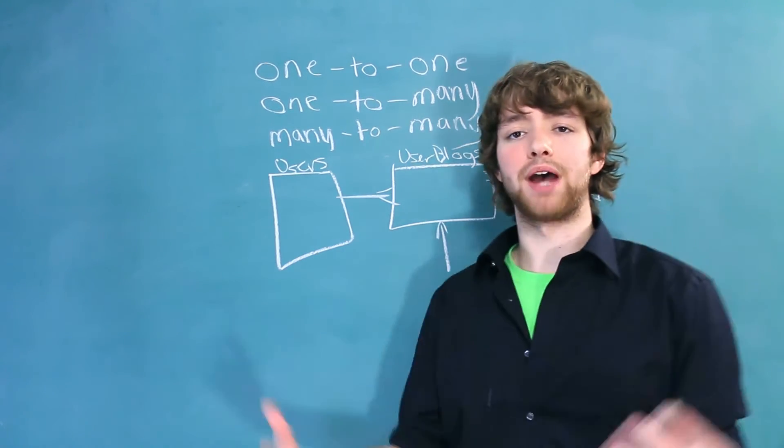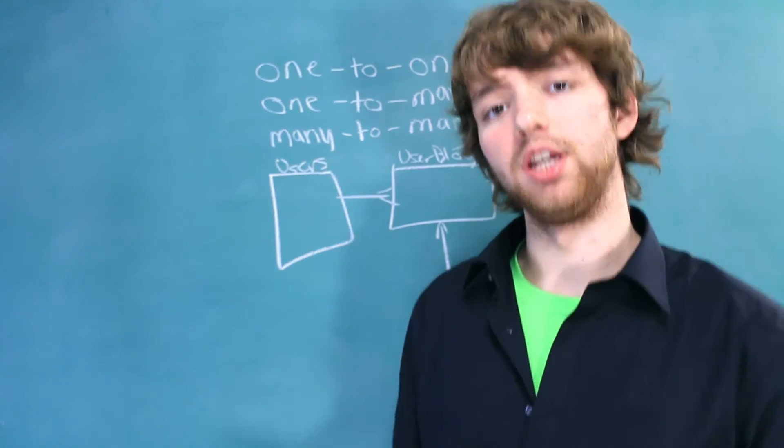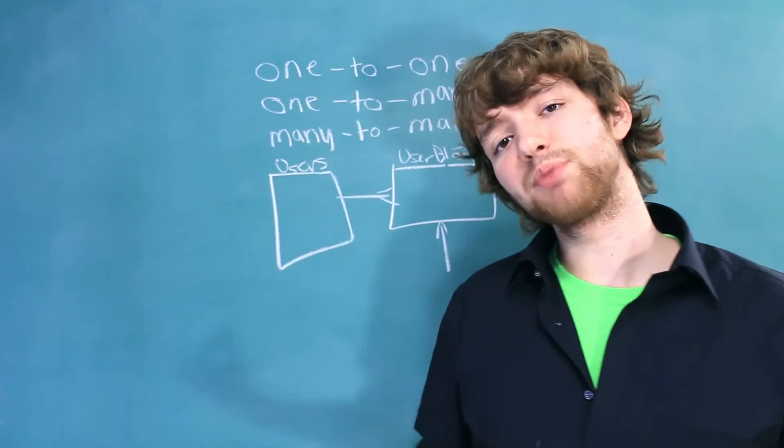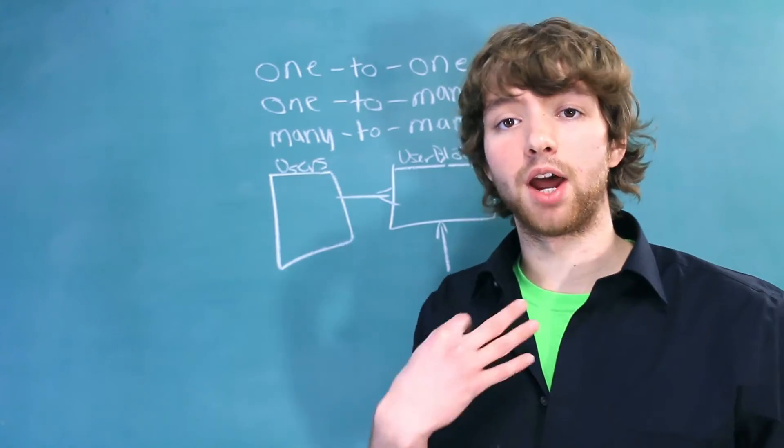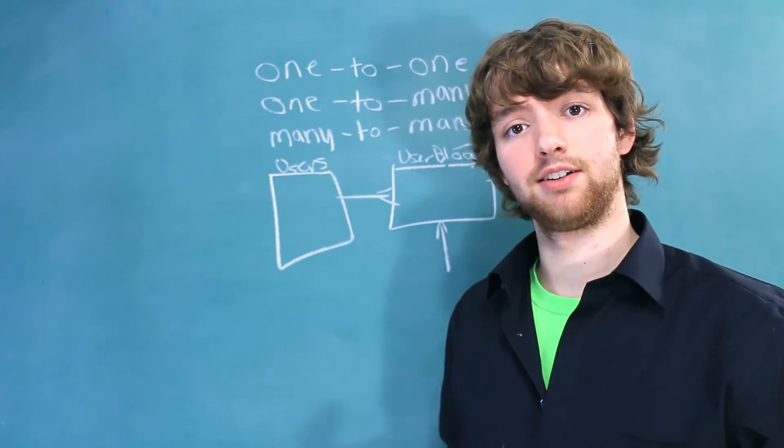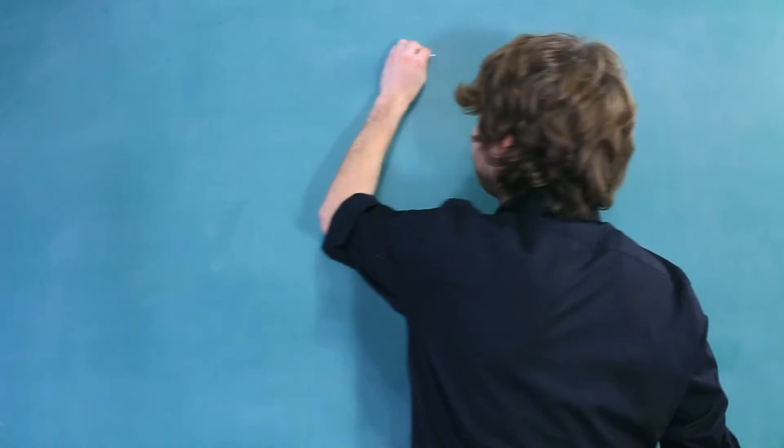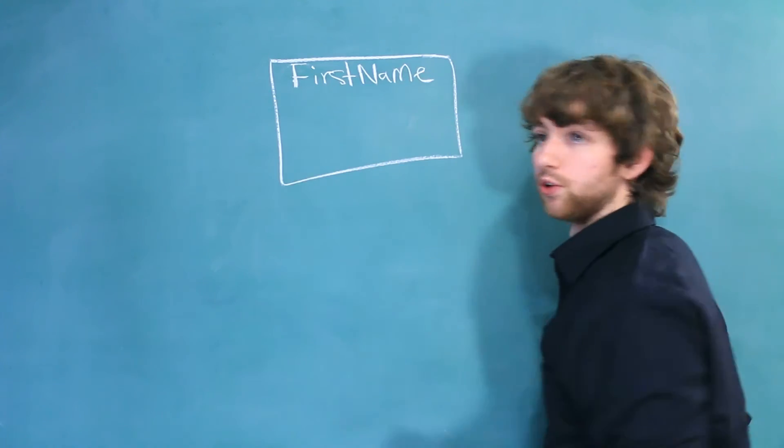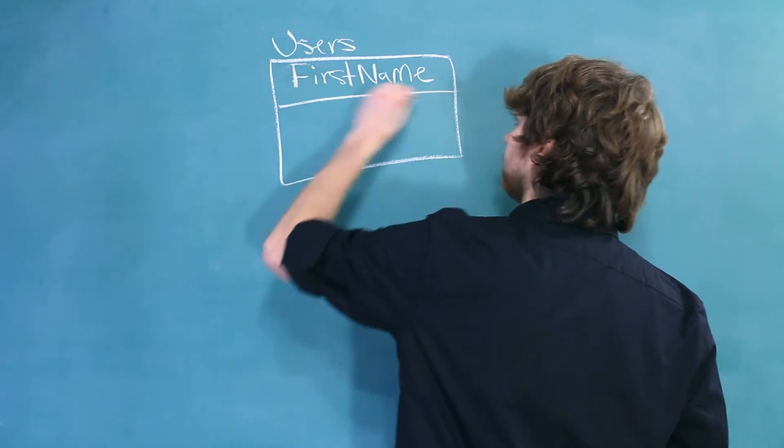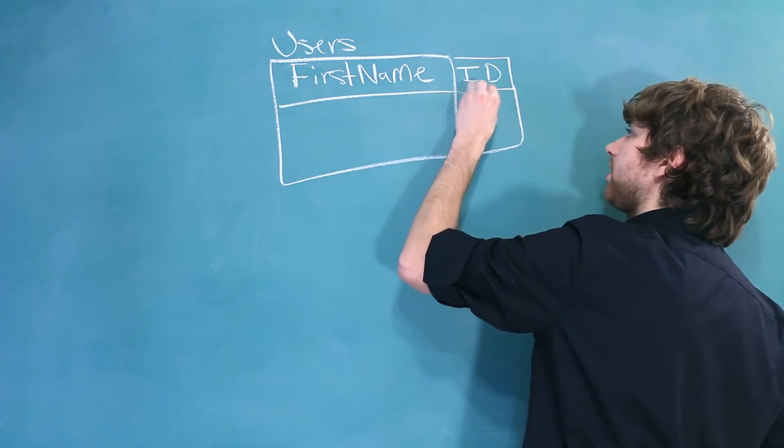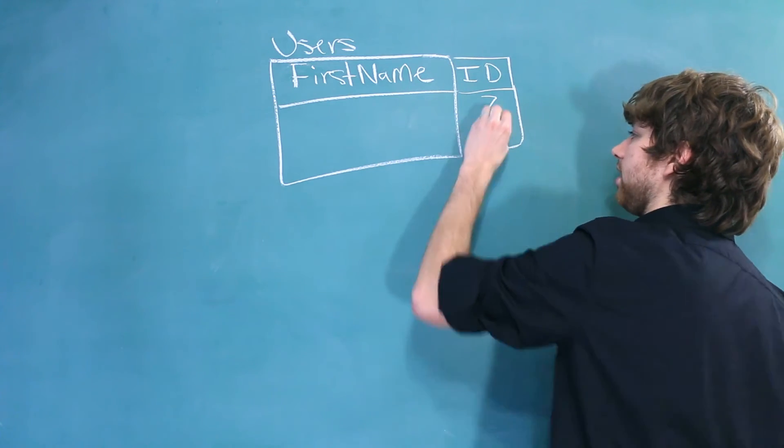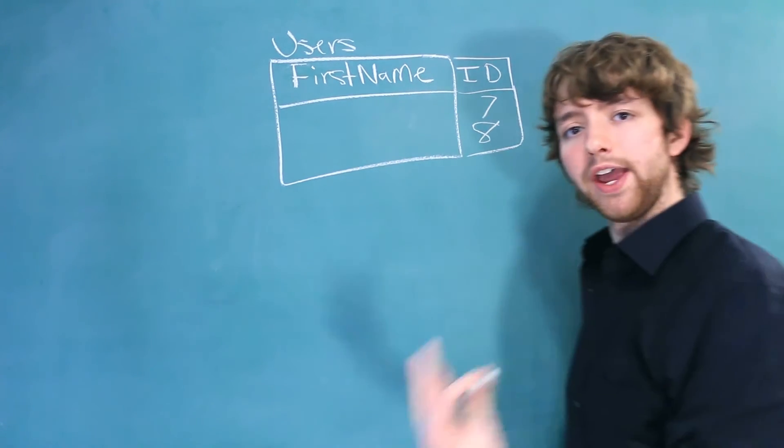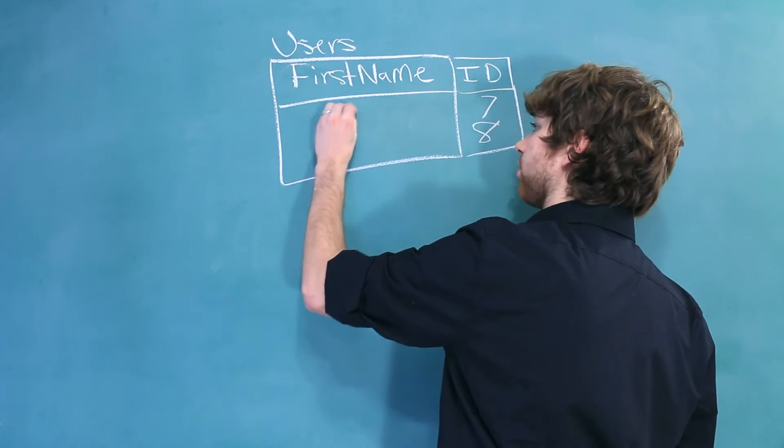So that sums up how to design each of the three relationships. Now, this brings up a question that I've been having, and I wanted to ask you and see what you guys thought. Let's say you have a users table, right? And one of the columns in here is first name. And we have two users inside of this table. One with the ID of seven and one with the ID of eight. And let's just say by chance, both of their names are Caleb.